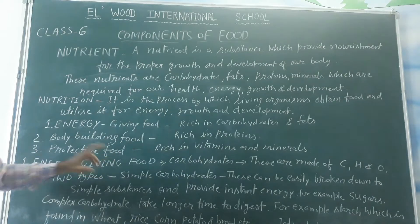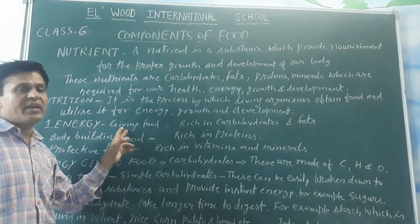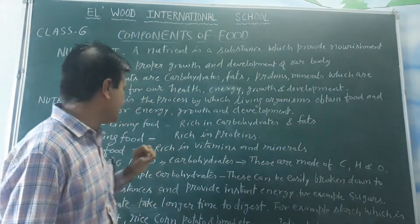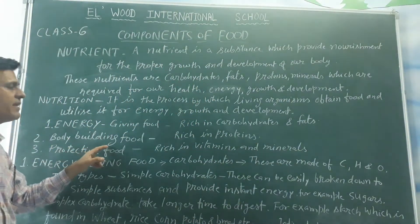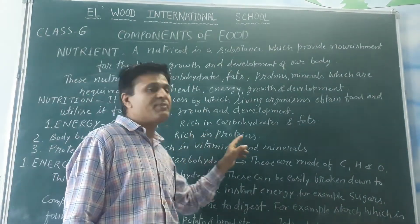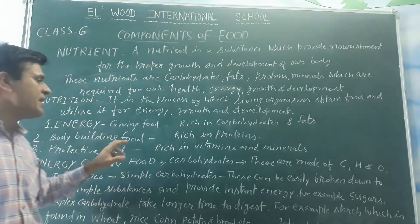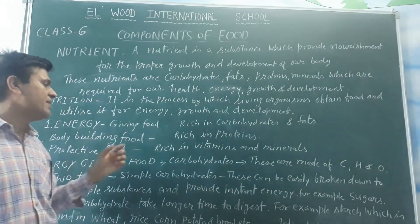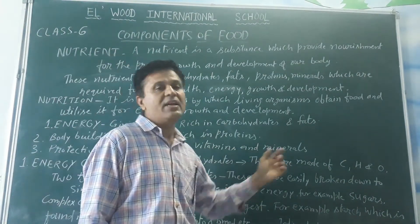Foods can be divided into three categories: energy-giving foods, body-building foods, and protective foods. Energy-giving foods are rich in carbohydrates and fats. Body-building foods are rich in proteins. Protective foods protect our body from disease and are rich in vitamins and minerals.